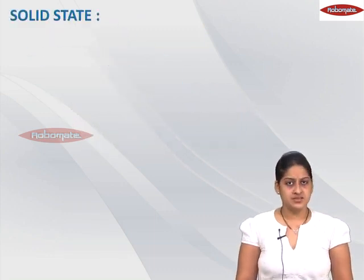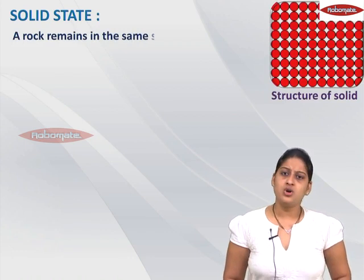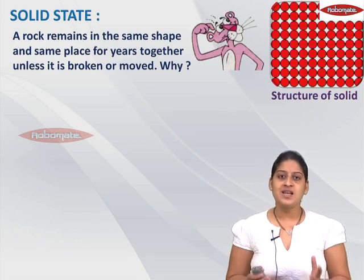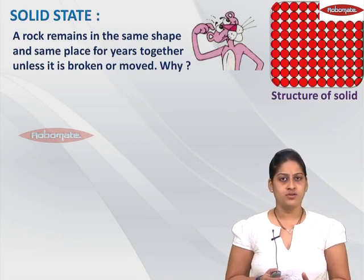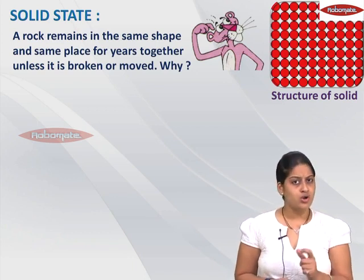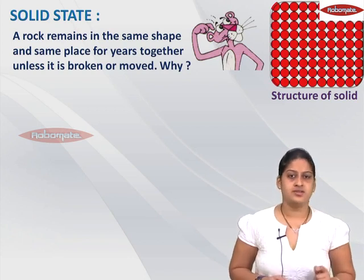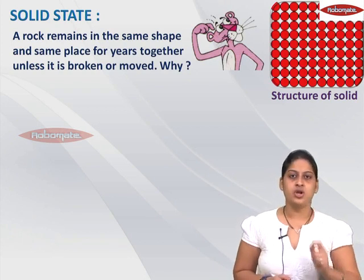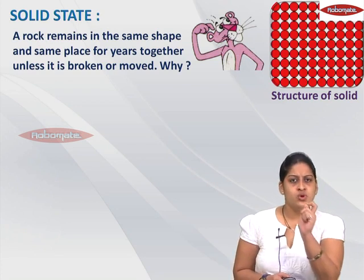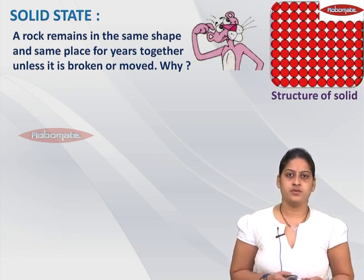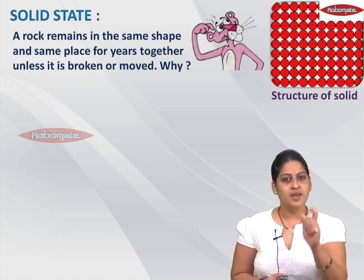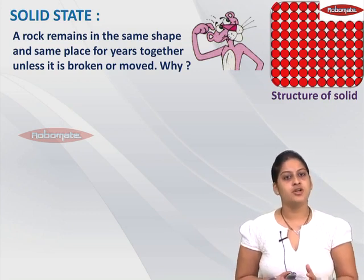Now if we talk about the solid state, we have seen that a rock remains in the same shape and the same place for years together unless it is broken or moved. Why does the rock not change its shape? Rock is a solid substance, and in a solid, if you see the structure, the particles are very closely packed to each other. There is no space between them and they can't move.